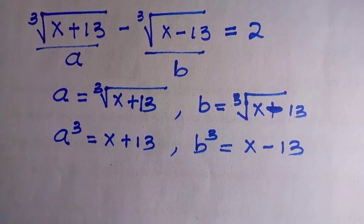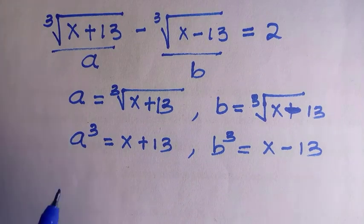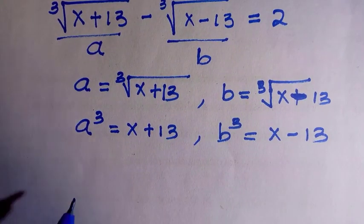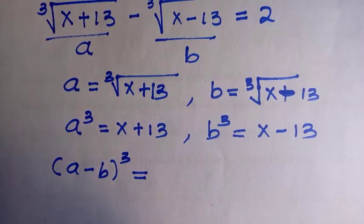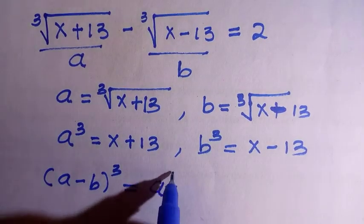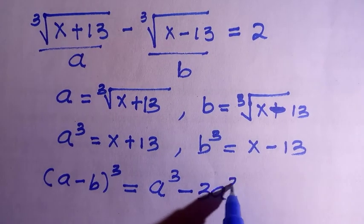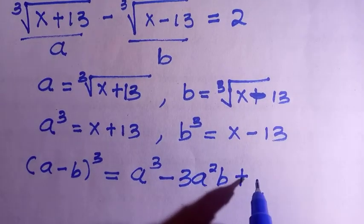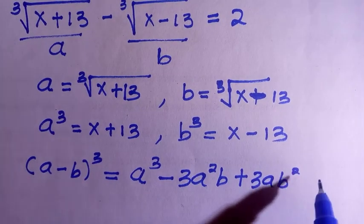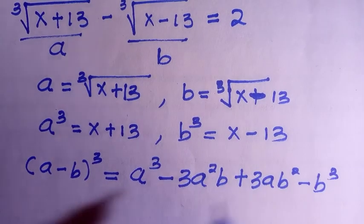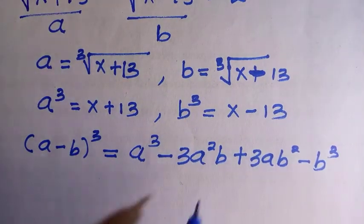After we have gotten this, we consider a particular identity: a minus b raised to power 3. This identity expands as a³ minus 3a²b plus 3ab² — this is just a binomial expansion to the power of 3 — and the last term is minus b³.